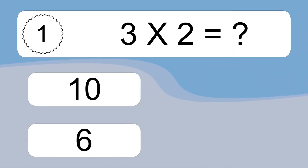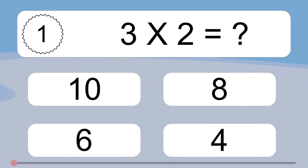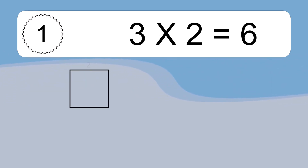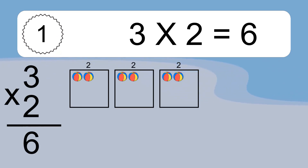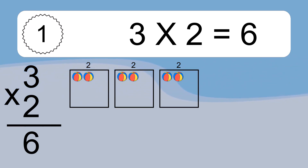3 times 2 equals what? 3 times 2 equals 6. We have 3 boxes, and each box has 2 colorful balls inside. If you count all the balls in all the boxes together, you will have 3 times 2 balls. This equals 6 balls.